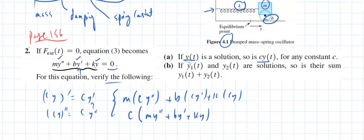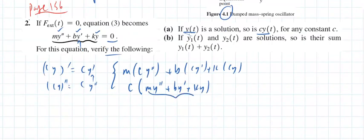And by definition, isn't that expression zero? If I get zero, that means cy is indeed a solution as well. And that's pretty much all I have to do.